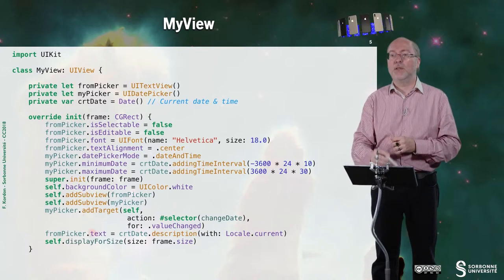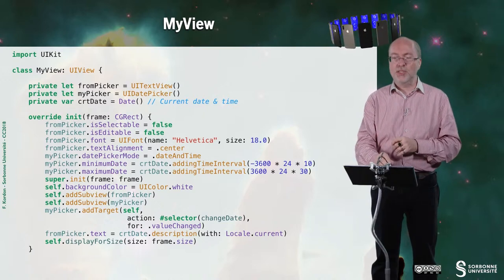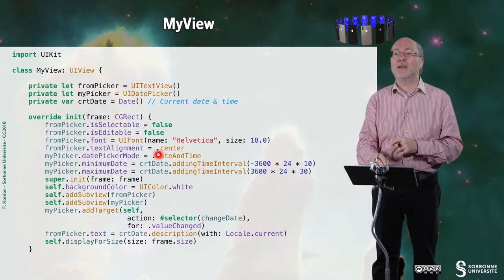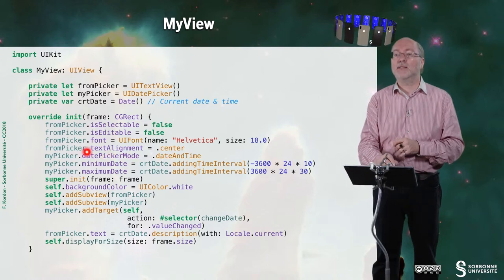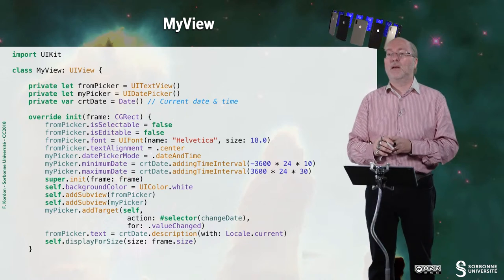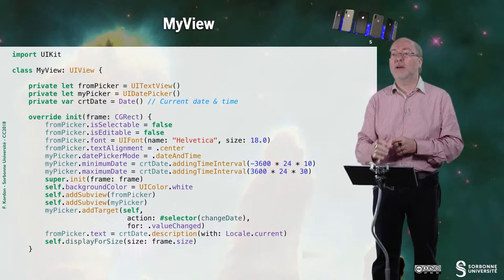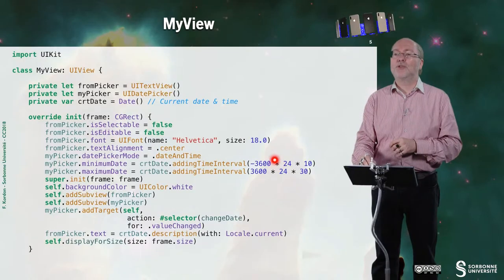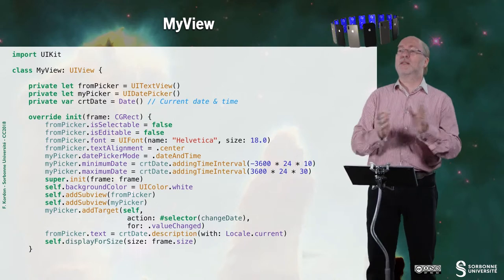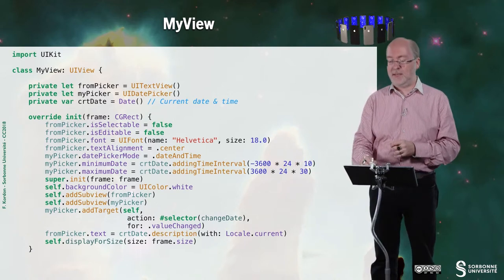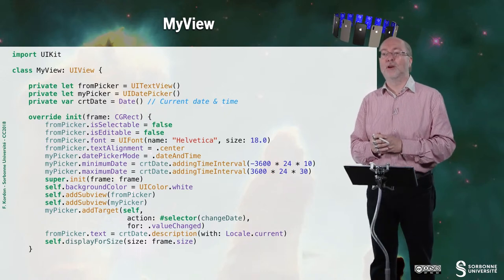So here in init I override. It's quite classical. You just see that I'm setting up everything. It's important to see that on my picker I set the minimum date and the maximum date. And I do add the time interval here. So minus 3600 times 24 times 10. So this is 10 days in the past. And this corresponds to 30 days in the future.